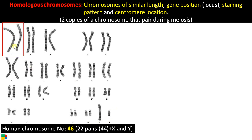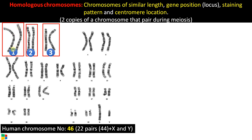So this is chromosome number one, this is chromosome number two, this is chromosome number three. As you can see, we are having two copies of the same chromosome that makes a homologous pair — chromosome number one in two copies, chromosome number two in two copies, and so on. Like that, we have 22 pairs of homologous chromosomes plus X and Y.